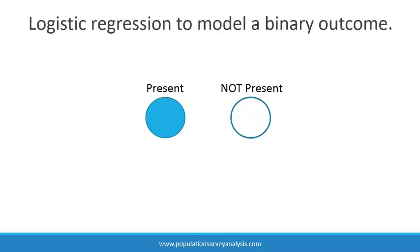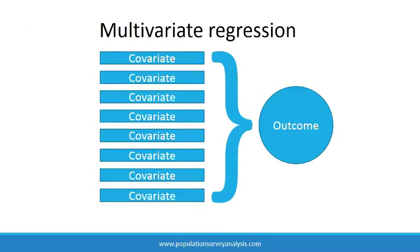Logistic regression is used to model the odds of a binary outcome. Results are reported as odds ratios — a ratio of the odds that the outcome occurs over the odds that the outcome does not occur.